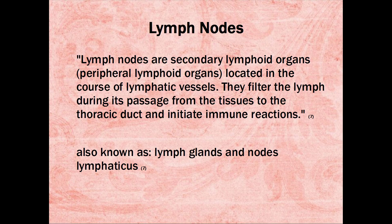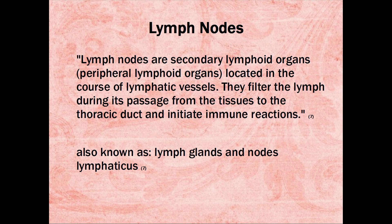First we're going to go over a few definitions. Lymph nodes are secondary lymphoid organs, peripheral lymphoid organs, located in the course of lymphatic vessels. They filter the lymph during its passage from the tissues to the thoracic duct and initiate immune reactions. They're also known as lymph glands and nodes lymphaticus.